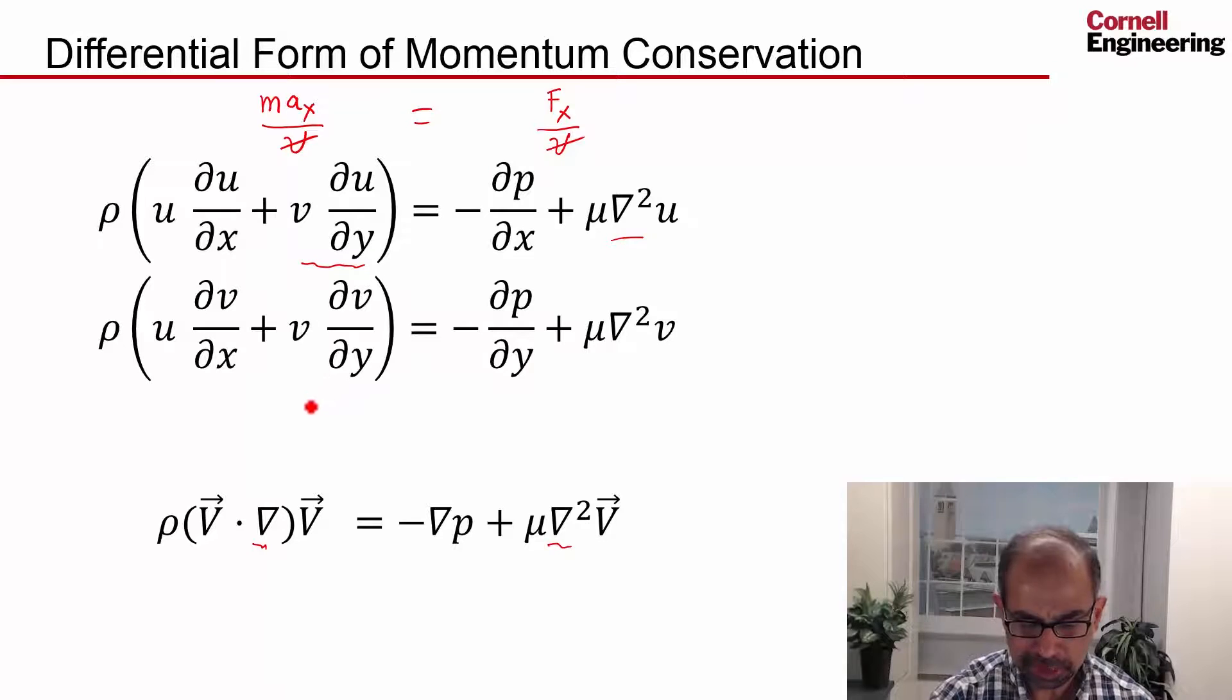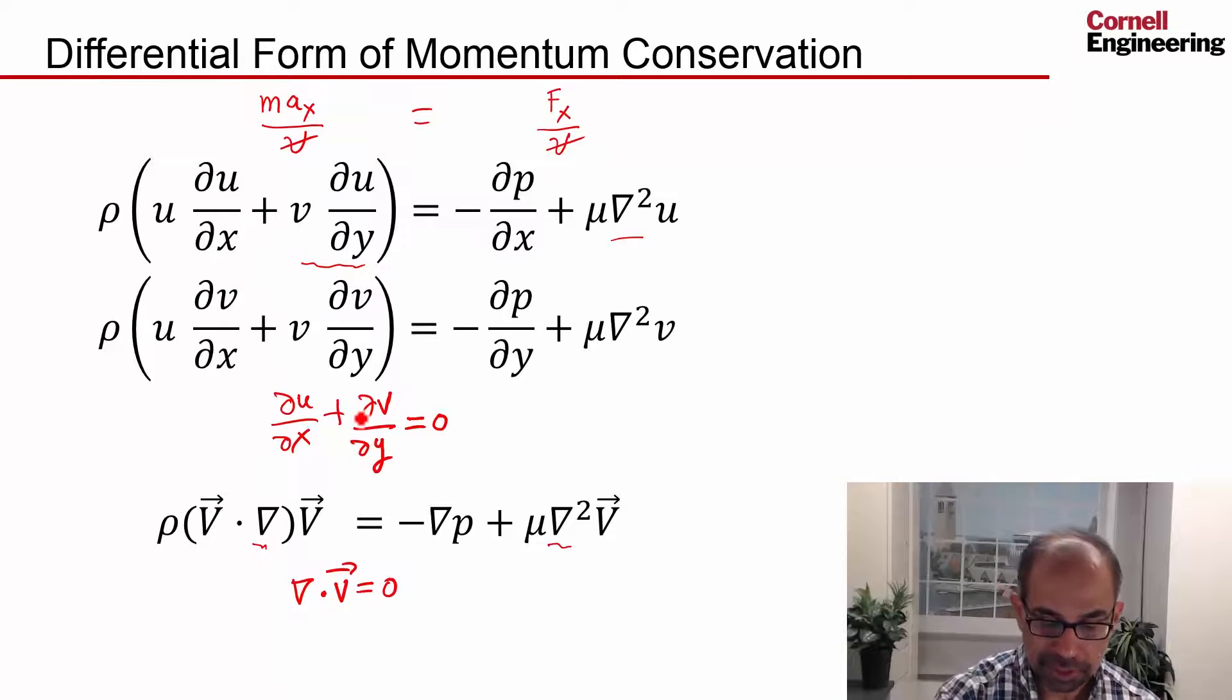And we have to couple these equations to continuity. So you have du/dx plus dv/dy is equal to 0, or in the vector form, it's del dot v equal to 0. So we have three partial differential equations, and we have three unknown fields. We have u, we have p, and we have v.